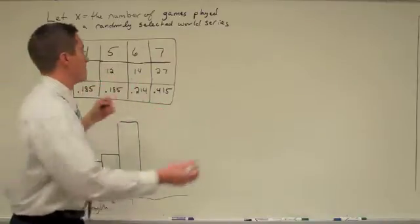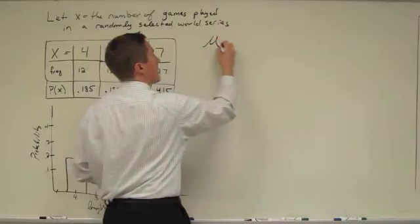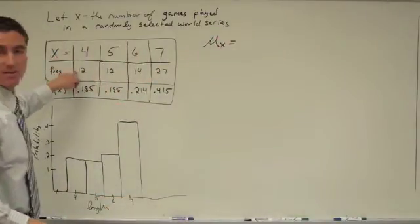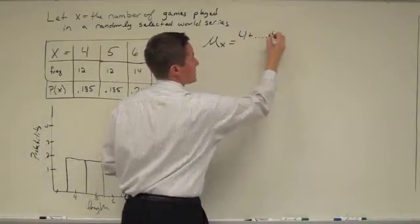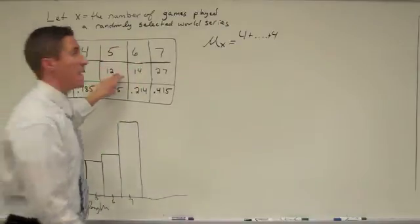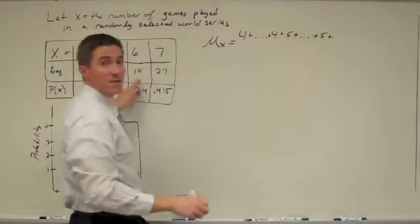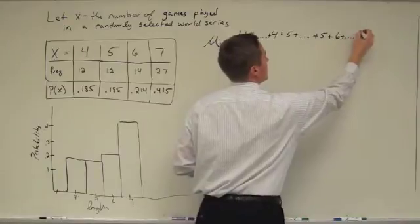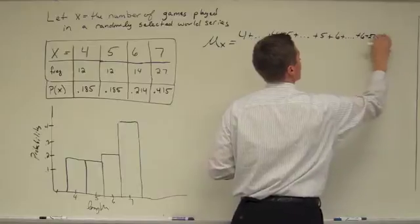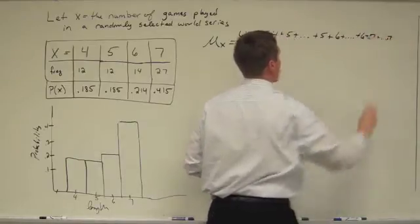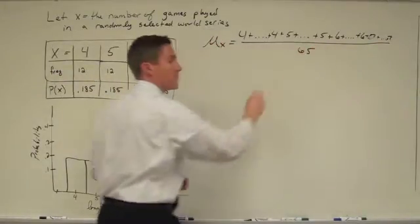And so if I do all the math here, so to find the mean, and this is the population, so I'm going to use my parameter of mu, I'm going to add all the fours together. And if you look at it, I have 12 fours. So I'd be 4 plus, okay, so we'd have 12 fours. And then I'd have 12 fives. We've got 12 fives. I've got 14 sixes. And then I'd have 27 sevens. All right, so we'd have all those. Take those, add them all up together. And in the end, I would divide by 65, the total number of games that I have.